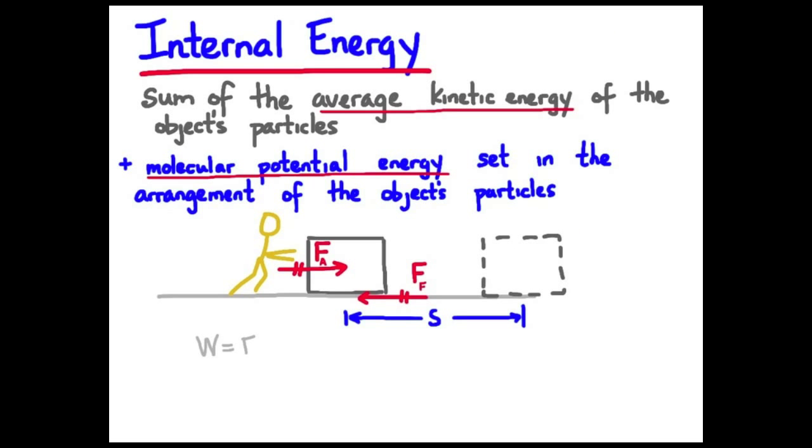Back to our boy pushing box example. The boy's obviously doing work pushing the box across the floor. The bulk kinetic energy of the box is not changing. It's moving at constant velocity. Where does that energy go? He's doing work on the box. Well, he's changing the internal energy of the box and the ground.